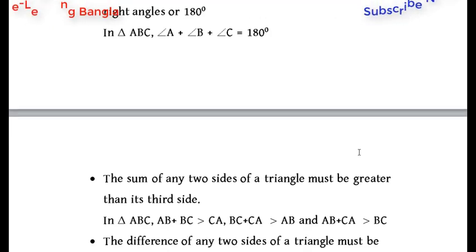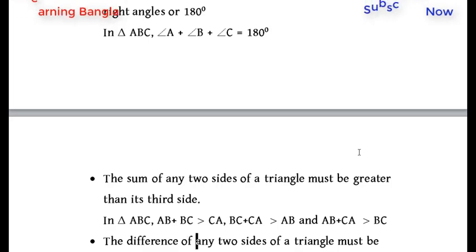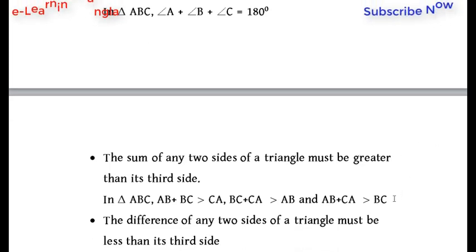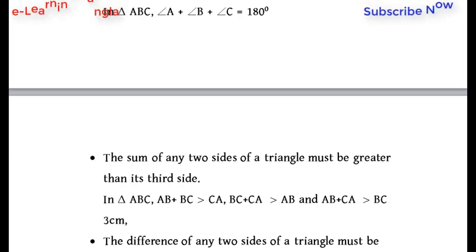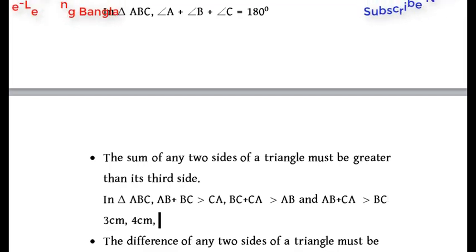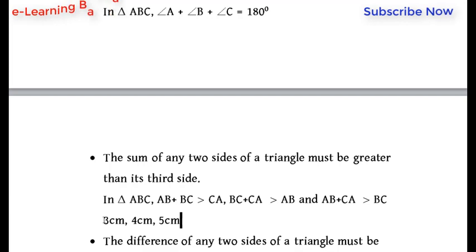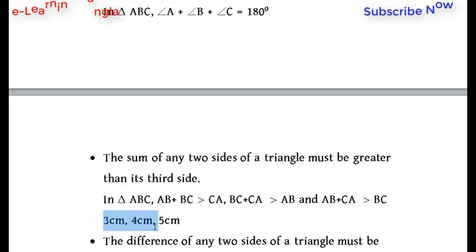The sum of any two sides of a triangle must be greater than its third side. In triangle ABC, BC plus CA must be greater than AB, and AB plus CA must be greater than BC. For example, a triangle with sides 3 cm, 4 cm, and 5 cm is valid; one with sides 3 cm, 4 cm, and 7 cm needs checking.